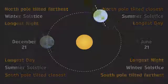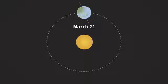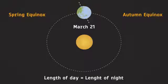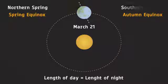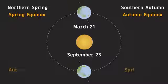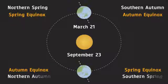During late March, both the hemispheres are at equal distance from the Sun and thus have an equal length of day or night. This is called an equinox and it marks the beginning of spring in the northern hemisphere and autumn for the southern hemisphere. Similarly, in late September, we have another equinox heralding the other two seasons.